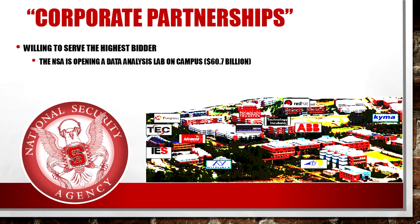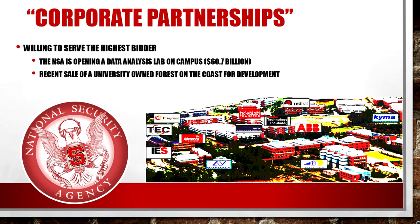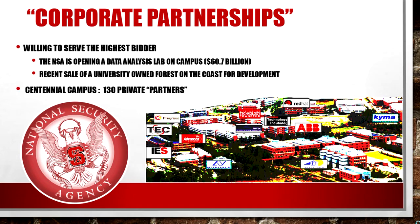The chancellor withheld this information for months while the Snowden leaks were in the media headlines. Another such incident is the sale of Hoffman Forest, a large piece of coastal property entrusted to the university. NC State has over 130 off-campus partners who contribute an immense amount of money to keeping the university running, especially as the school is prevented from obtaining adequate state funding.